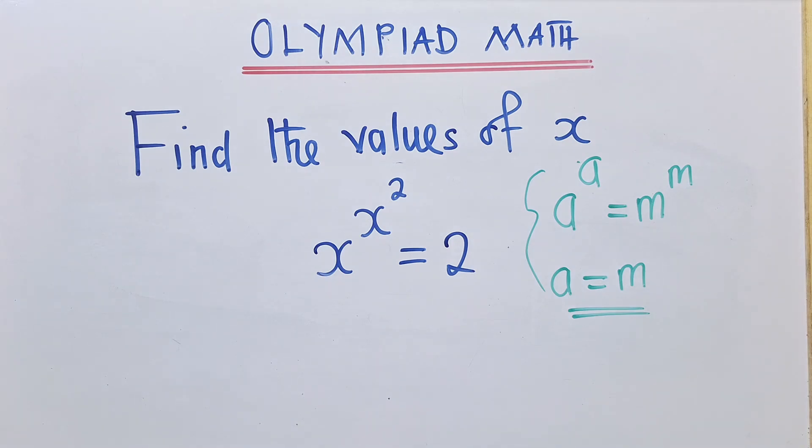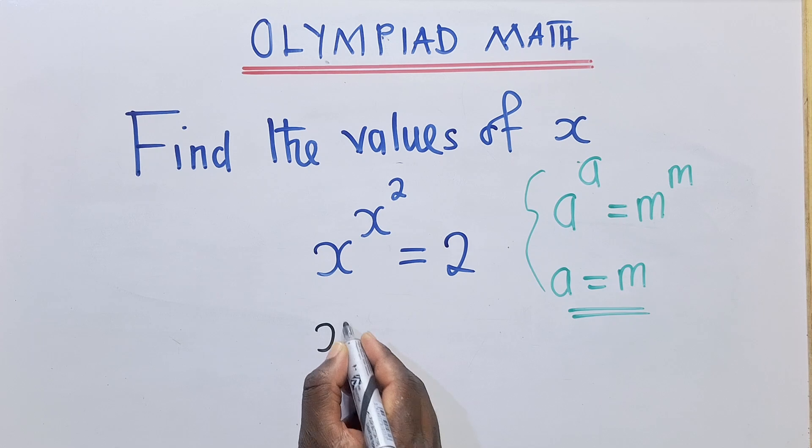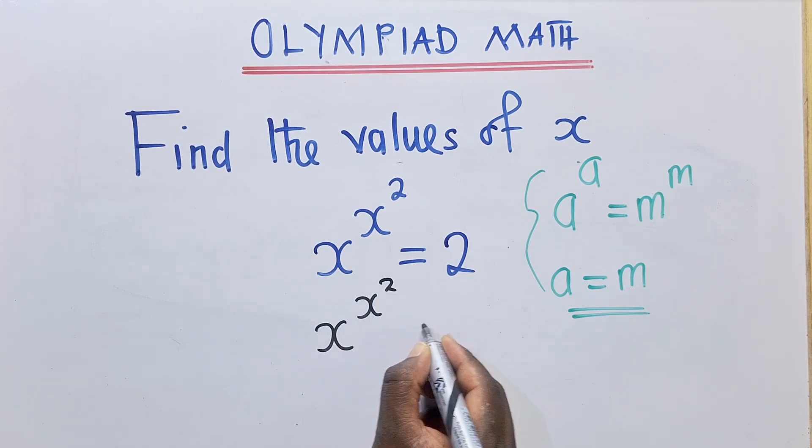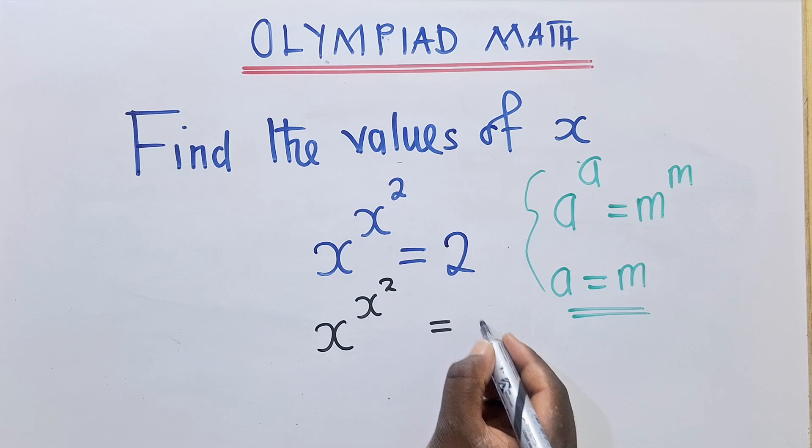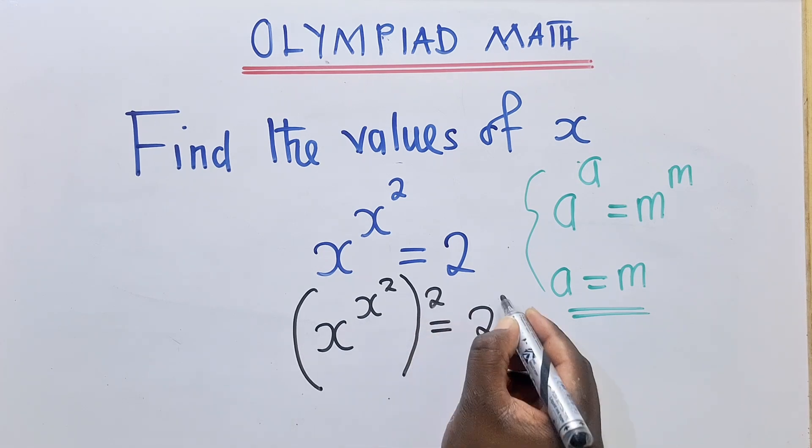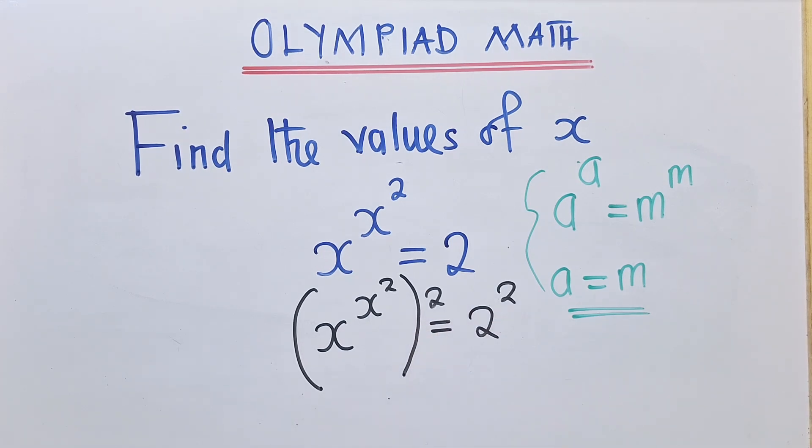Okay, so in order for us to apply this property, we need to play with this equation that we have right here. So we shall say x^(x²) is equal to 2. Okay, and here we're going to put the brackets like this. We apply a power 2 here and a power 2 here.